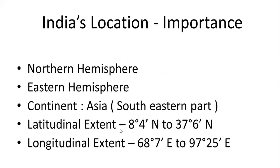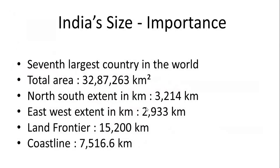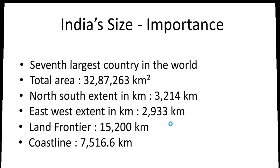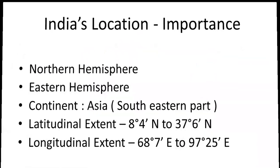So far, whatever we have seen — it is just a recap in points. India lies in the northern hemisphere and eastern hemisphere. Continent is Asia — it is the southeastern part. Latitudinal extent, longitudinal extent — all these can be a one-mark question whether for NTSC or your boards. Size, land boundary, coastline — the coastline is inclusive of Andaman and Nicobar and Lakshadweep islands. India's size and importance: seventh largest country, total area, north-south extent in kilometers, east-west extent in kilometers, land frontier, and coastline.